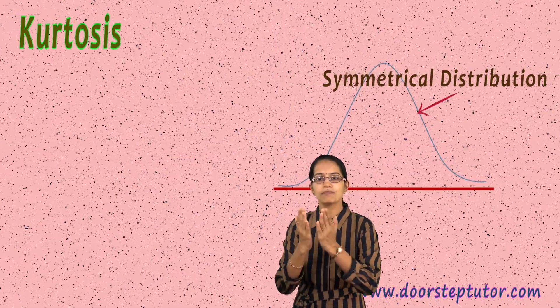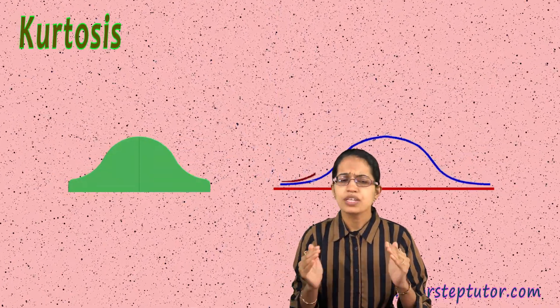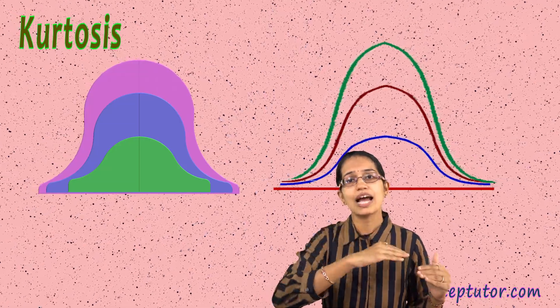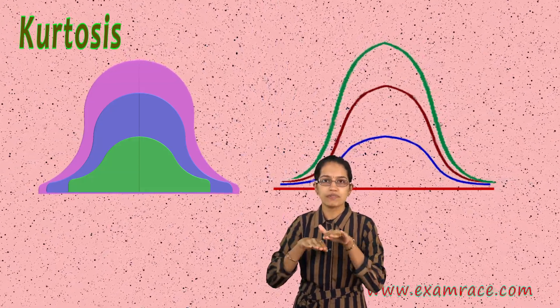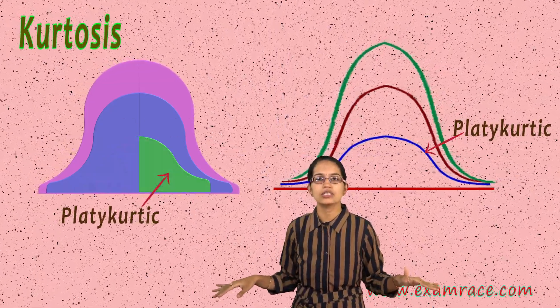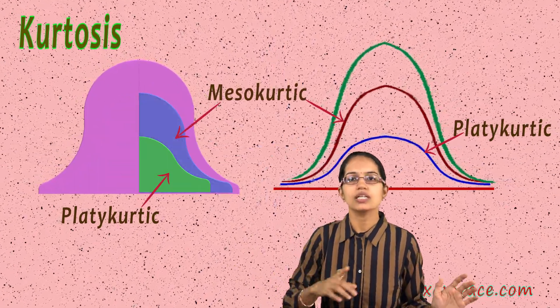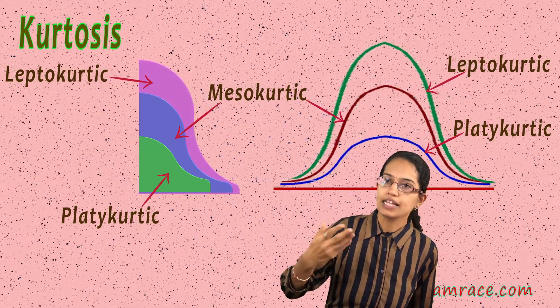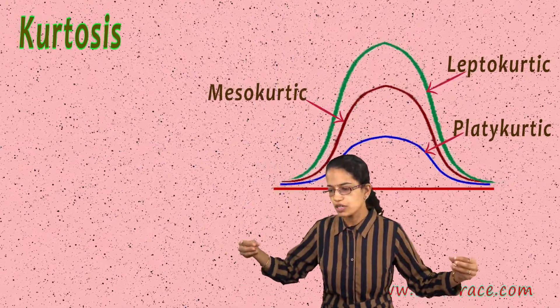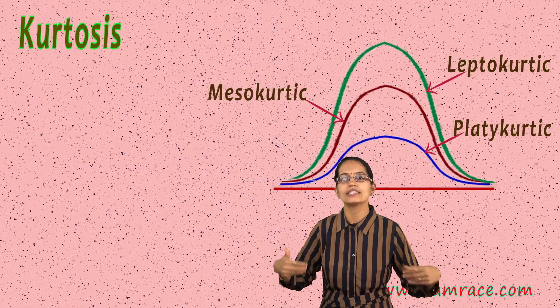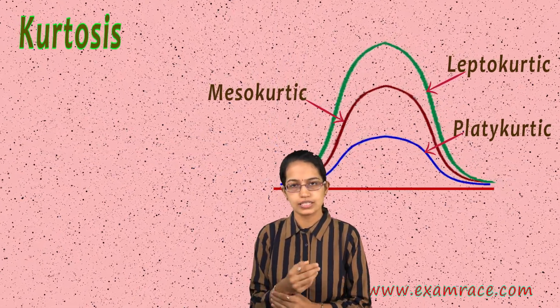The next important term is kurtosis, which is the shape of the distribution. With a normal probability curve, it is a symmetrical distribution. Kurtosis is also symmetrical but either flattened or steepened. If it is flatter, we say it is platykurtosis. If it is normal, we say it is mesokurtosis. And if it is peaked, we say it is leptokurtosis. Distributions with a flatter curve have fewer scores towards the tail as compared to a normal distribution curve.